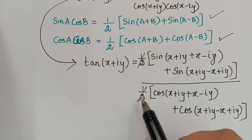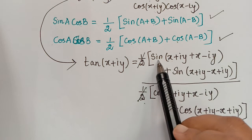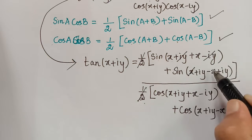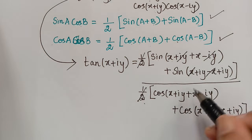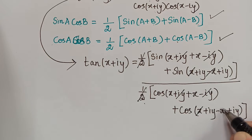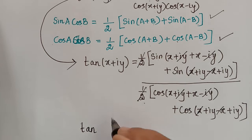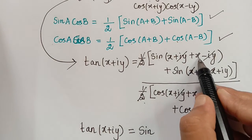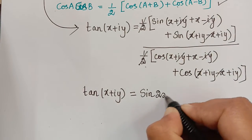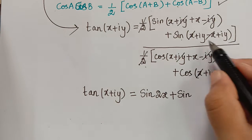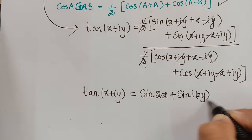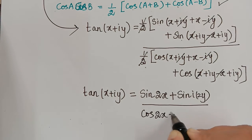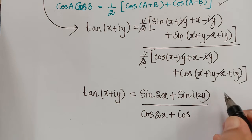The factors of one-half in the numerator and denominator cancel. In the numerator, (x + x) = 2x and (+iy - iy) cancels, giving sin(2x). Also (iy + iy) = i·2y, giving sin(i·2y). In the denominator, (x + x) = 2x, giving cos(2x), and (iy + iy) = i·2y, giving cos(i·2y). So tan(x + iy) = [sin(2x) + sin(i·2y)] / [cos(2x) + cos(i·2y)].